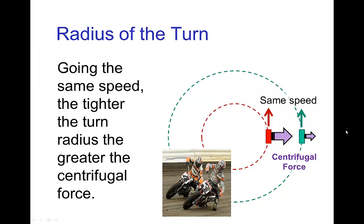One last thing about this effect: let's say we have two motorcycle riders going the same speed — one on the inside of the turn, one on the outside. Going the same speed in miles per hour, the one on the inside of the turn experiences a greater centrifugal force, and thus would have to lean more to maintain dynamic balance compared to the rider on the outside of the turn.